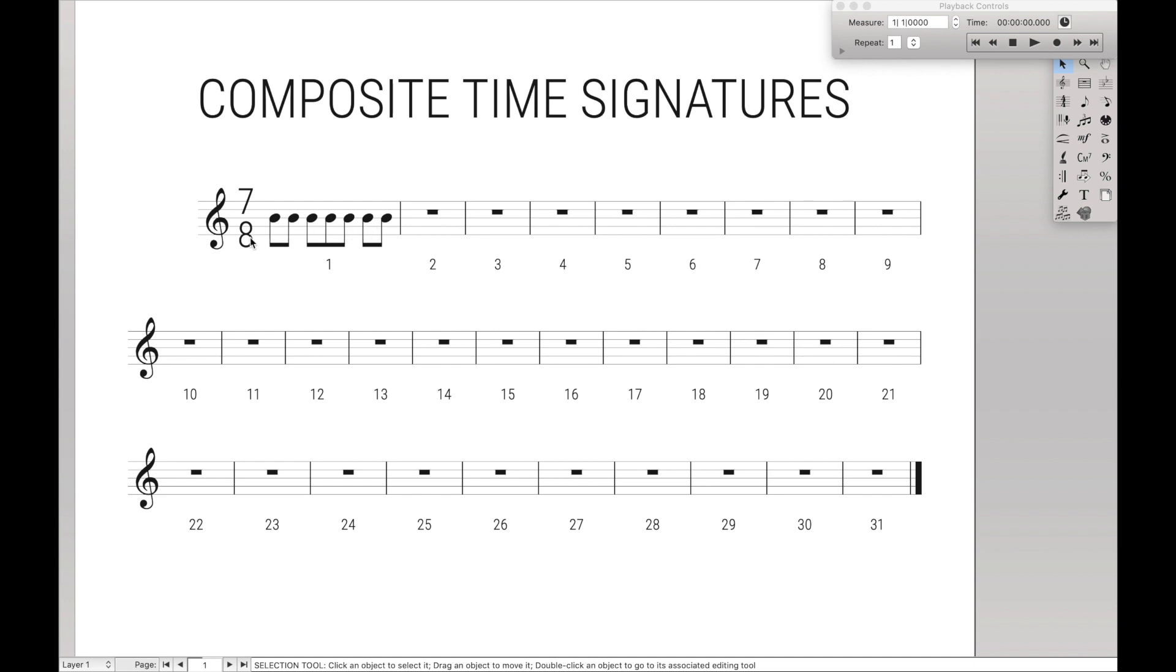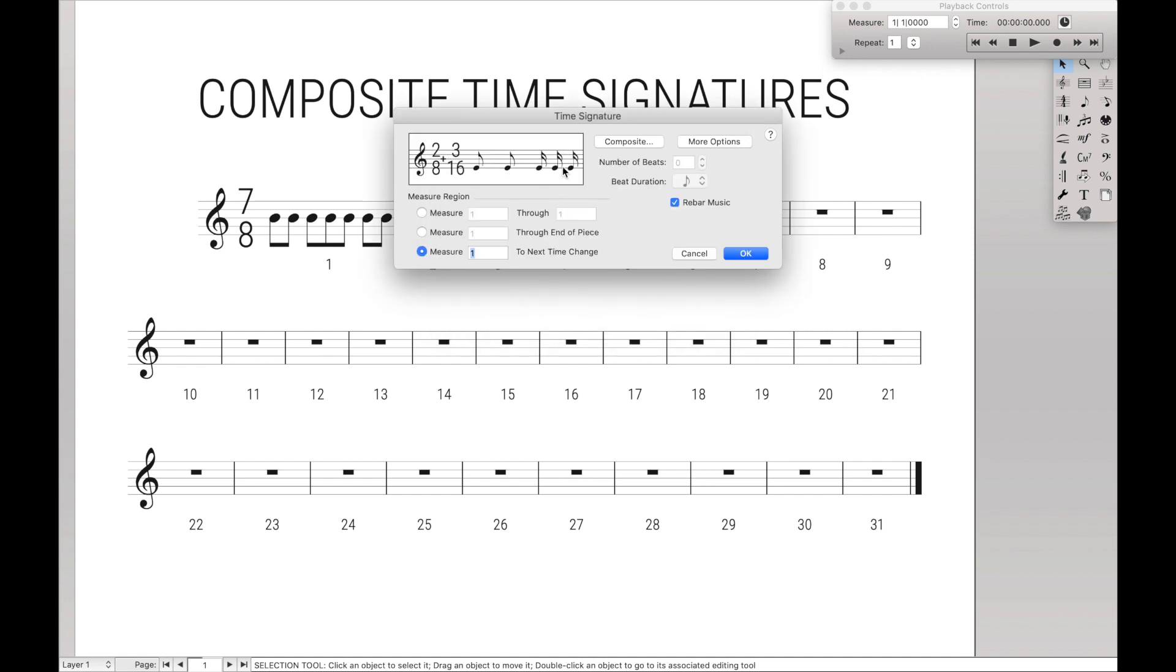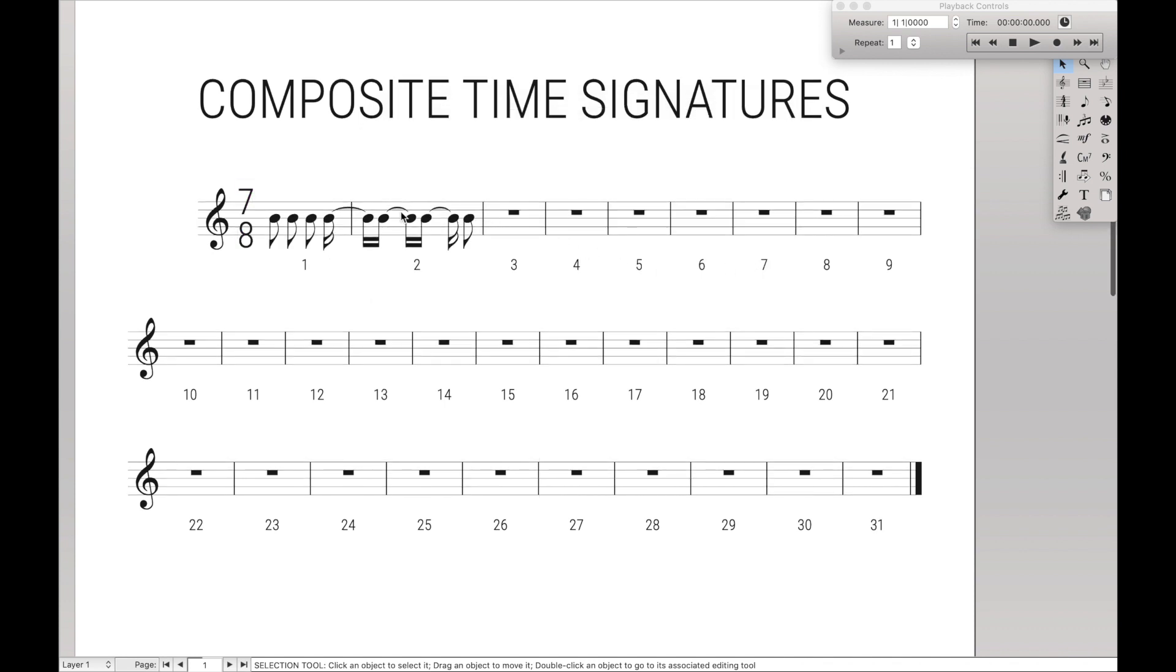And one last thing that you might want to do in case you really want to combine really odd time signatures together is also in the composite time signature, you don't just have to do 2 plus 3 plus 2 eighth notes in one grouping. You could do 2 eighth notes like this and delete that. 2 eighth notes plus 3 16th notes and really create an odd beaming like this. And hit OK. And there you go. You have 2 eighth notes plus 3 16th notes.